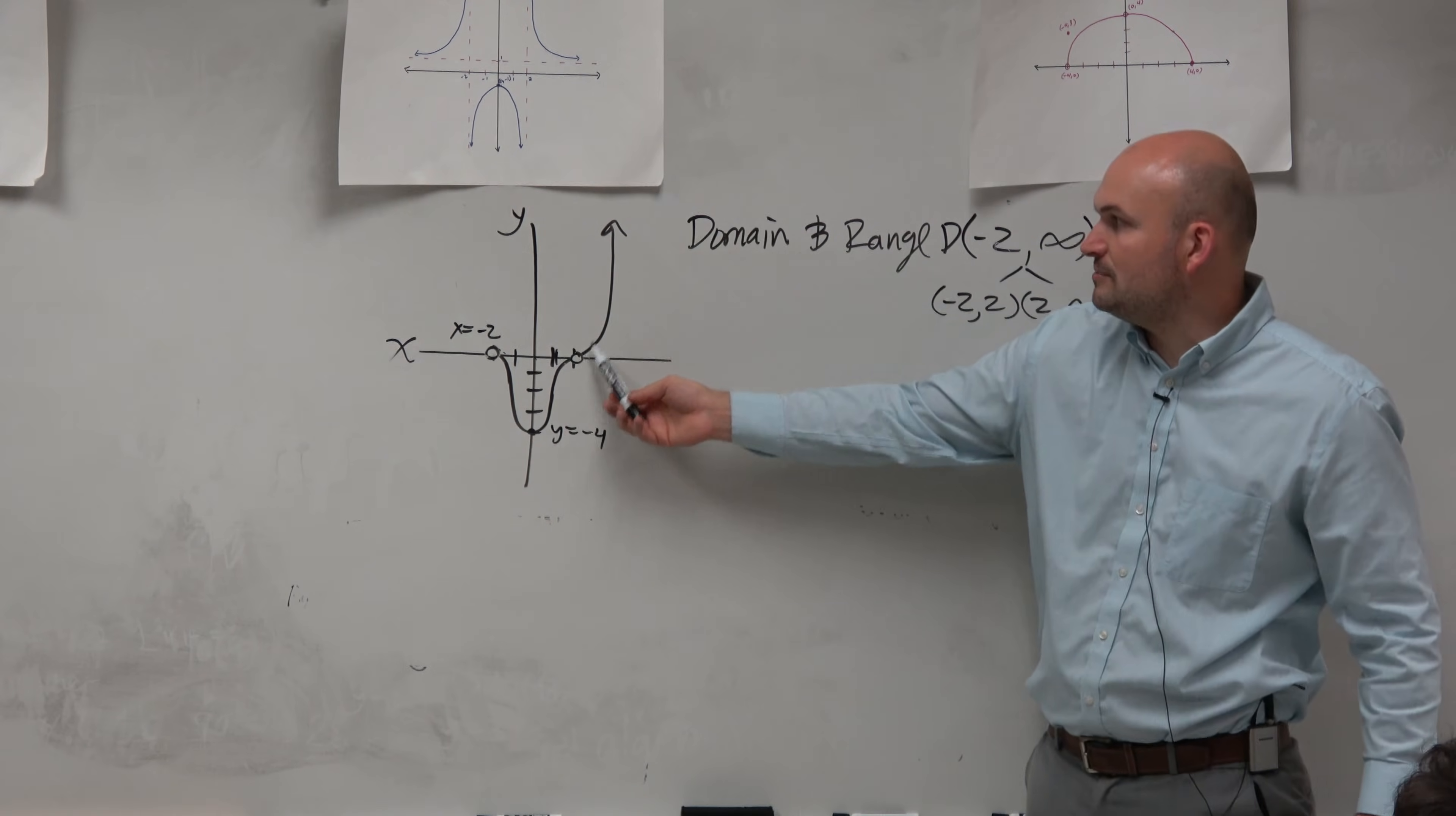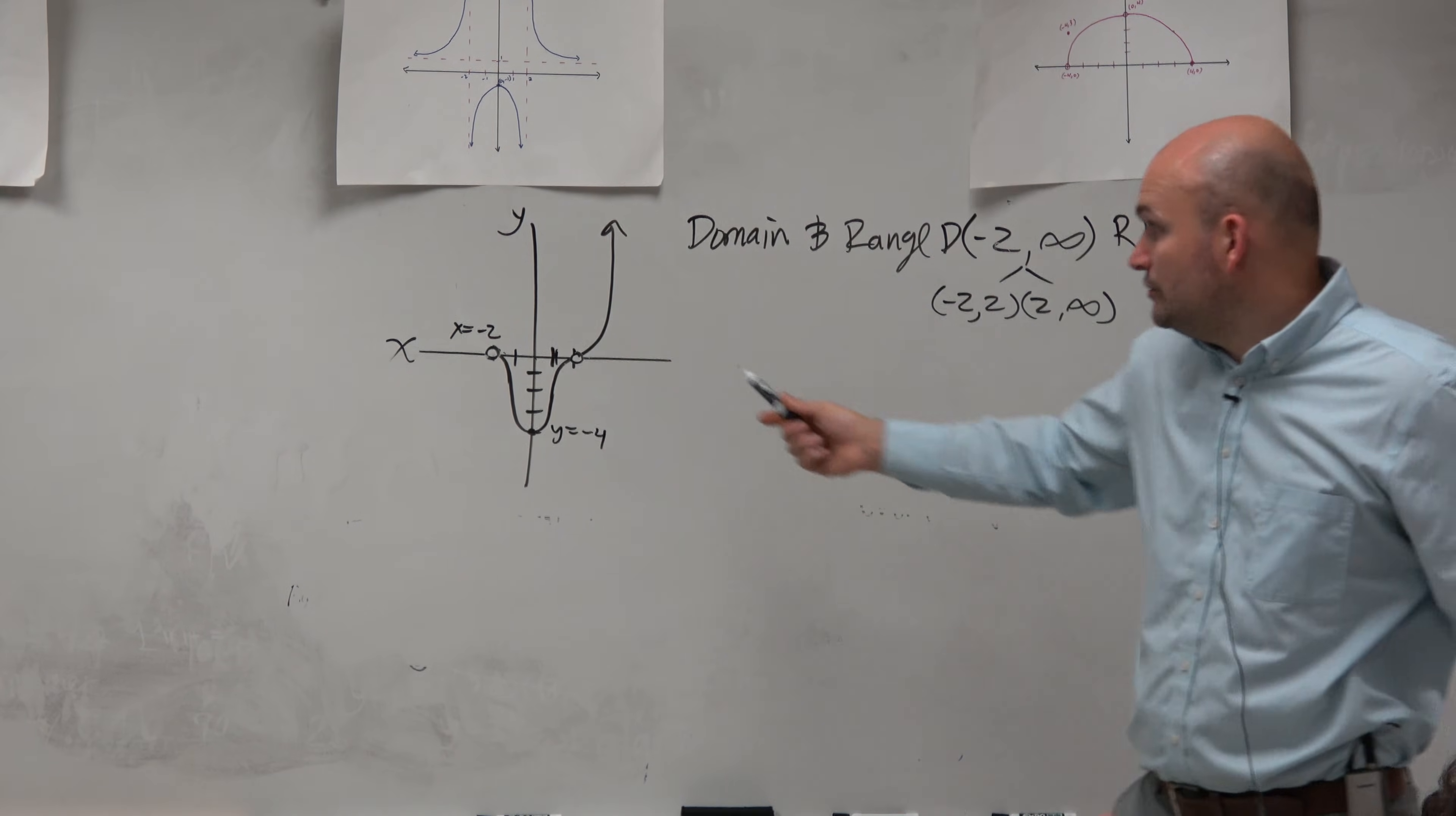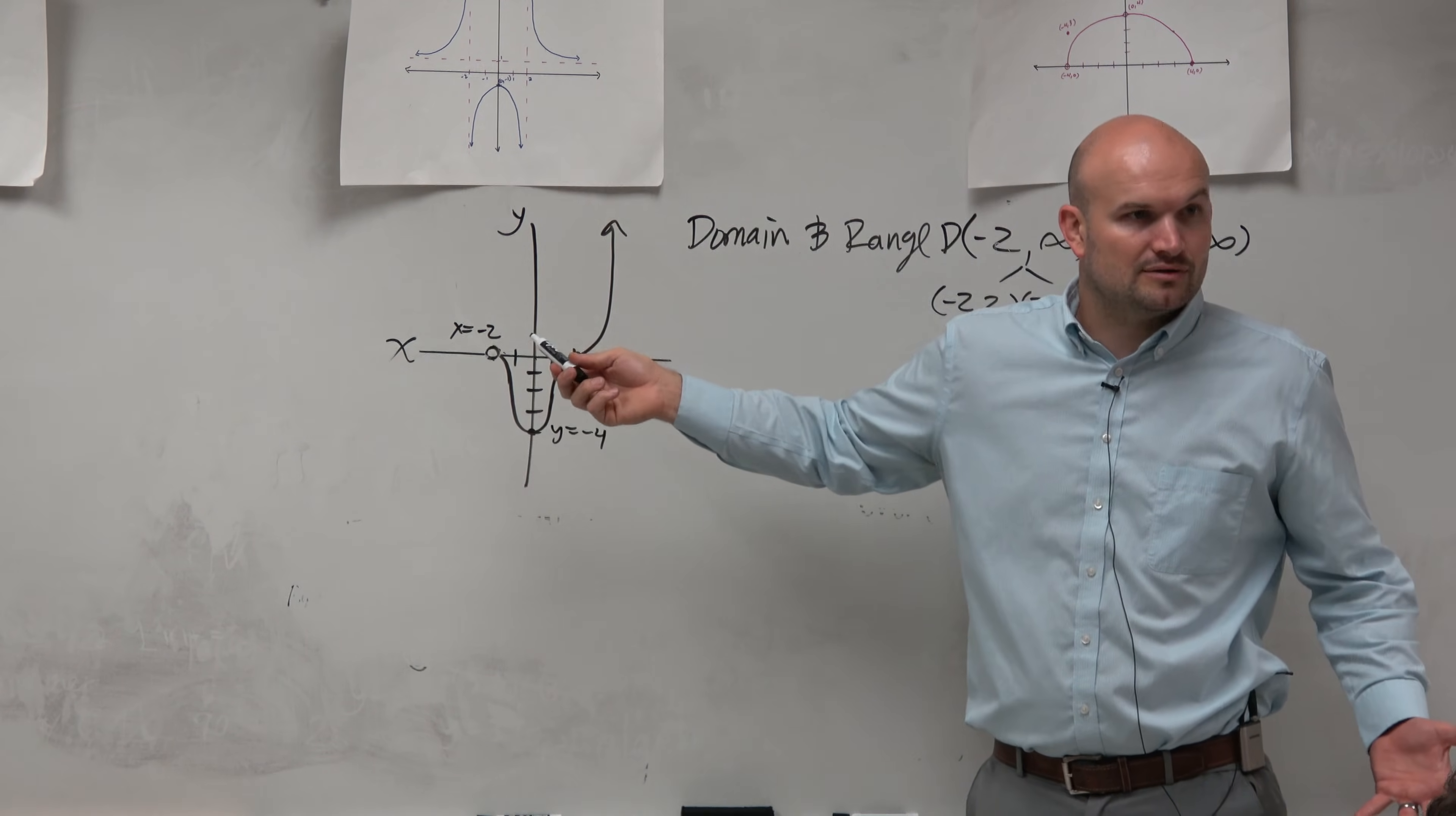And then we just do the domain from 2 to infinity. Again, the domain is the set of all x values. You have all these x values are all coordinate points on this graph, except not at negative 2 and not at 2, in this hypothetical situation.